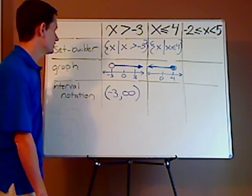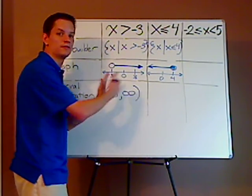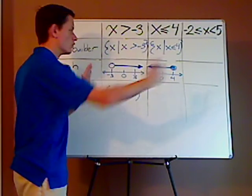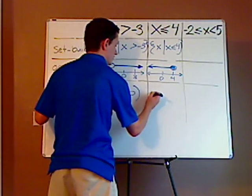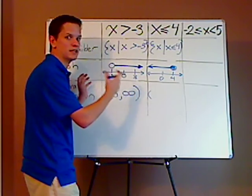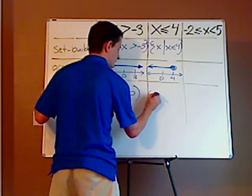Now, interval notation, start from left to right, it's always in order. So this is starting at a very large negative number, which would be negative infinity.